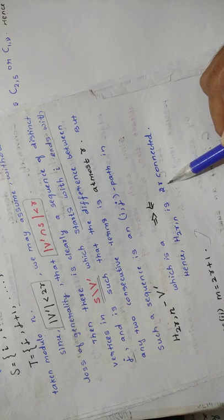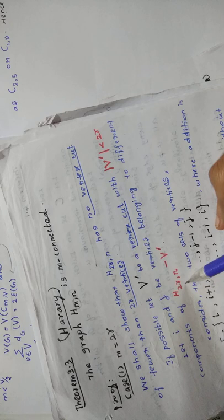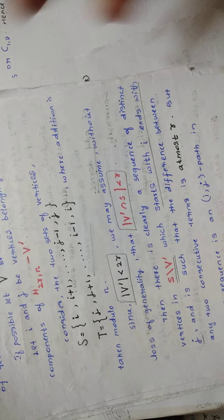Now here you have case 2. Case 2 says that M is odd. Case 2 is very easy — if you learned case 1, then case 2 is very easy. In the place of 2R, just put 2R+1 and write. All other steps will be similar to case 1.